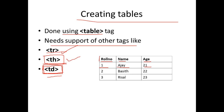Now we have 4 tags. The first one is the table tag, which is used to create a table. TR tag is used to start a new row. TH tag is table header. TD tag is table data.